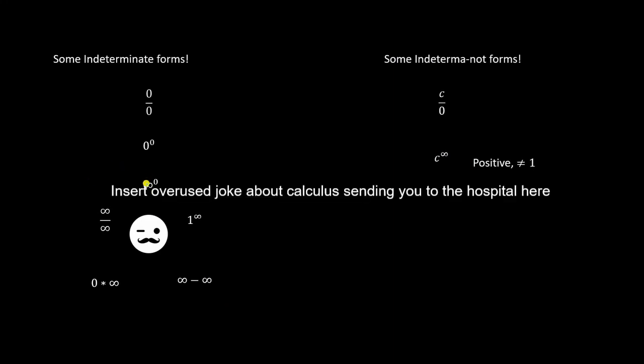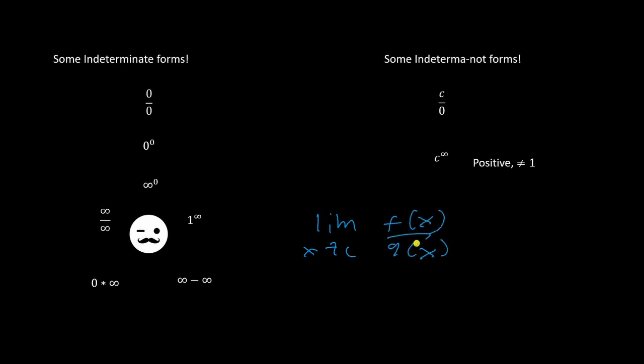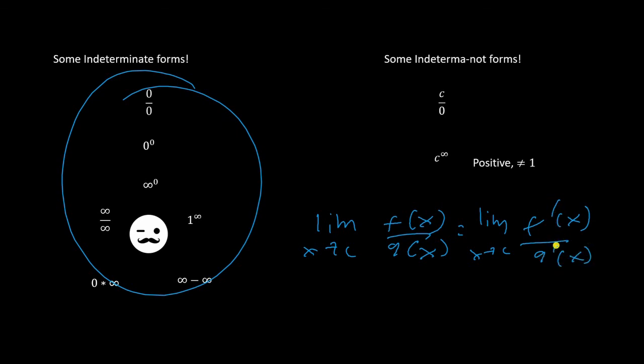The last topic in this unit is L'Hopital's rule. L'Hopital's rule is a neat trick to evaluate certain limits. If plugging in the desired value directly leads to an indeterminate form, any one of these, then you can use L'Hopital's rule. What it says is that this limit is equal to the limit as x approaches c of the derivative of the top over the derivative of the bottom. Take the derivative of the top and the bottom separately. Do not use the quotient rule, just treat them like two totally different things. Once you do that, plug in the number again and see if it works. Sometimes it will, or maybe you'll get an indeterminate form again. If you get it again, just take the derivative again. It will work, as long as you have an indeterminate form. If you have a constant over zero, a positive constant other than 1 to infinity, and so on, using L'Hopital's rule will give you the wrong answer.